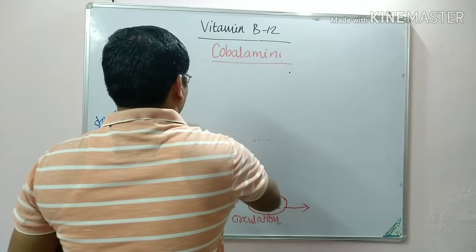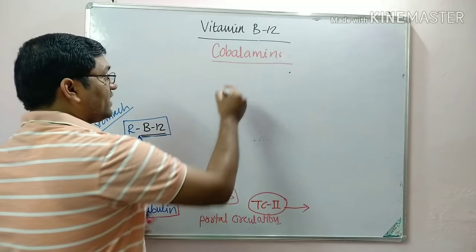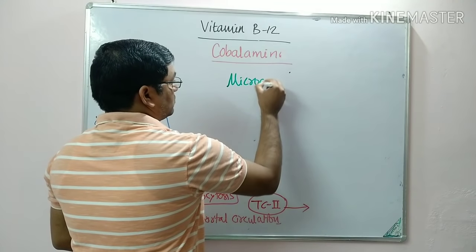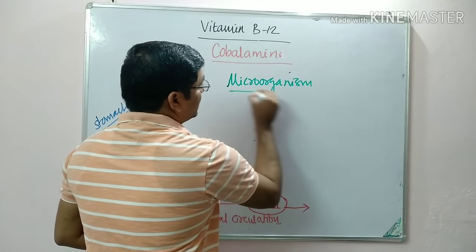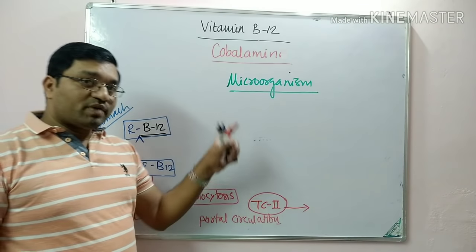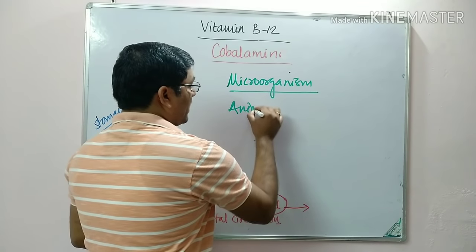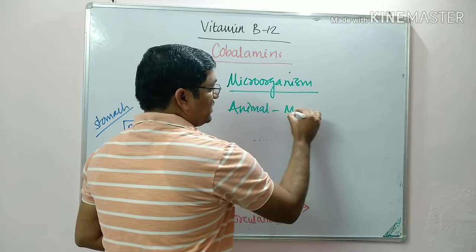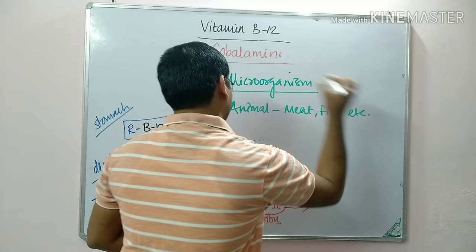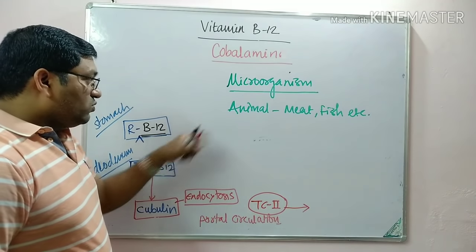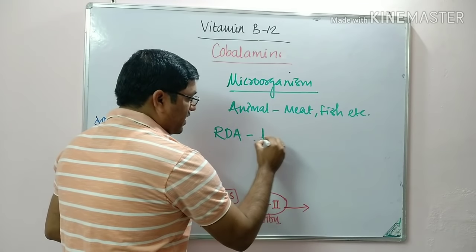Regarding dietary sources: Vitamin B12 is mainly produced by microorganisms in the intestinal flora of animals; therefore it is present in foods of animal origin such as meat and fish. The recommended dietary allowance (RDA) is 1 microgram.